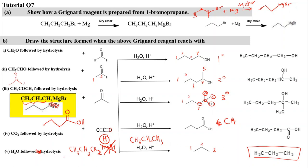For tutorial question 8, we complete the mind map for the primary haloalkane — bromoethane (CH₃CH₂Br). Starting with the left side: reacting with a strong base KOH in ethanol causes dehydrohalogenation — removing Br and one adjacent hydrogen to form a C=C double bond, producing CH₂=CH₂ (ethene). Remember, Br and H are removed from adjacent carbons, not the same carbon.